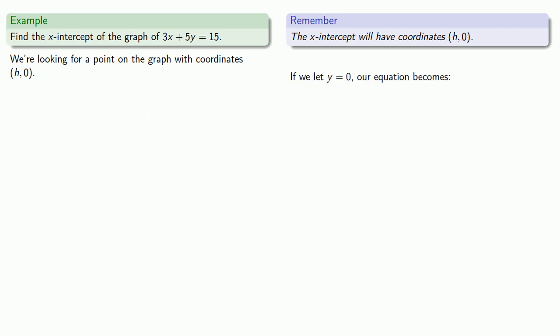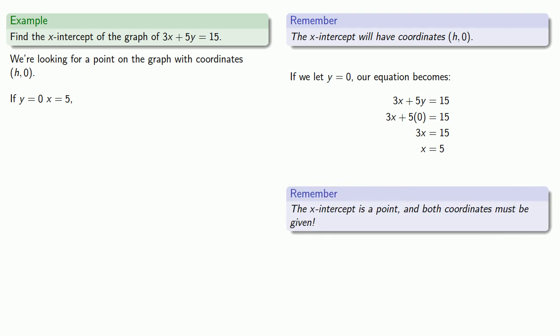Let's let our y-coordinate be 0. If we do that, then our equation becomes 3x + 5(0) = 15, and we can solve this for x, so x equals 5. So if y equals 0, x equals 5. So what's the x-intercept? And it's important to remember that the x-intercept is a point, which means that both coordinates must be given. So that means that the point on the graph is (5, 0).